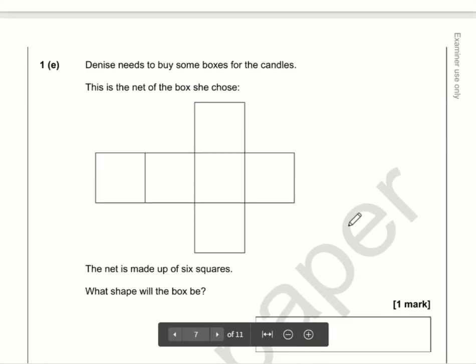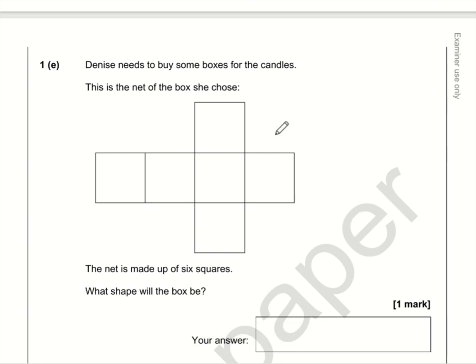So what shape will the box be? Well if every face is a square and there are six of them, then that will be a cube.